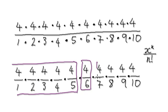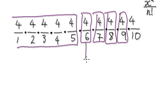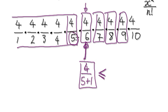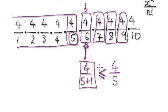So here you've got one fraction, here you've got another fraction, here you've got another fraction, and so on. If you look at this fraction here — say 4 over 5 plus 1 — if you compare this fraction here, it will be smaller than 4 over M, because we're making the denominator bigger, so that means the overall fraction would be smaller than this thing here.